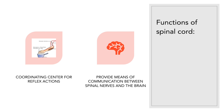There are two main functions of the spinal cord. The first one is as a coordinating center for reflex actions, and the second one is to provide a means of communication between spinal nerves and the brain.